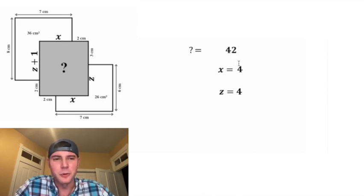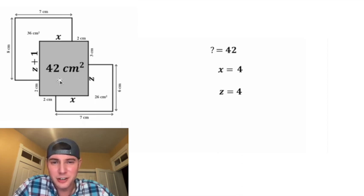And 6 times 7 is equal to 42. We have now found the value of our question mark. It's 42. So for this question mark, let's put in 42 centimeters squared. That is the answer to our question, and it's already got a box around it. How exciting.